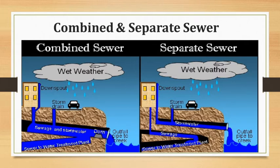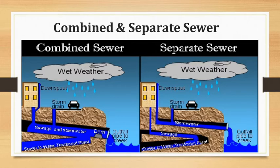Considering the labor aspect, the water carriage sewage system requires negligible or small labor for operation and maintenance, whereas the conservancy system depends heavily on labor. Regarding final disposal, the water carriage system provides easier final disposal due to treatment of waste, while the conservancy system poses risks due to open and land disposal.